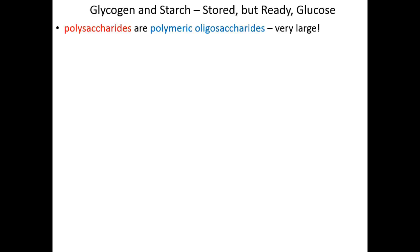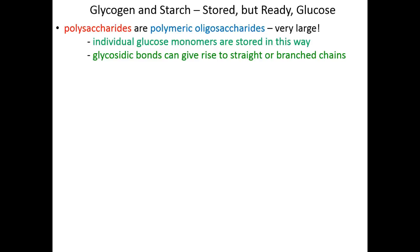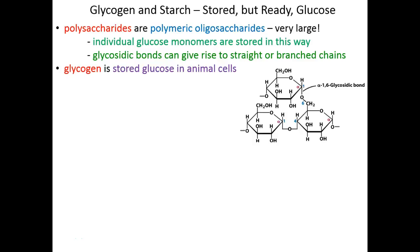Those are disaccharides, but we can go even further — we can make polysaccharides. Polysaccharides are literally polymeric oligosaccharides: lots and lots of sugars linked together into very large structures. Individual glucose monomers can be stored in these large arrays of complex glucose polysaccharides. Glycosidic bonds are used to link each of them, and those bonds can give rise to straight chains or a branched chain structure. The polysaccharide that we use as animals to store our glucose for short-term storage is called glycogen, and glycogen is a branched structure made up of straight and branched O-glycosidic bonds.